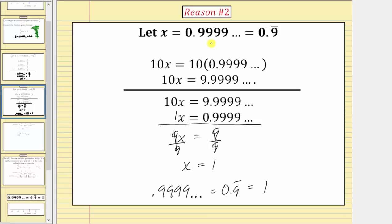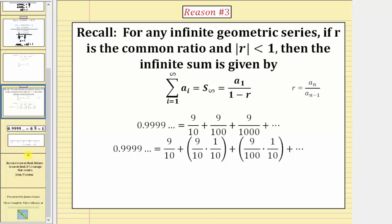For the third reason why 0.9 repeating equals one, we use an infinite geometric series — typically a topic in Algebra 2 or College Algebra. For any infinite geometric series, if r is the common ratio and the absolute value of r is less than 1, the infinite sum equals a sub 1, the first term, divided by 1 minus r. We write 0.9 repeating as an infinite series: 9 tenths plus 9 hundredths plus 9 thousandths, and so on.